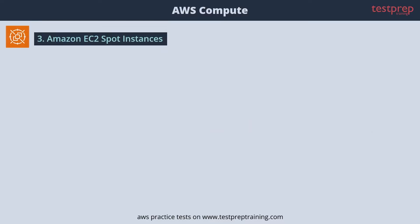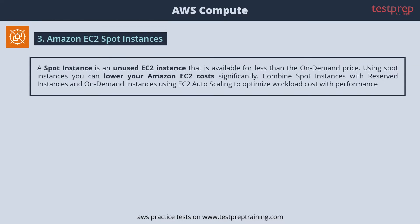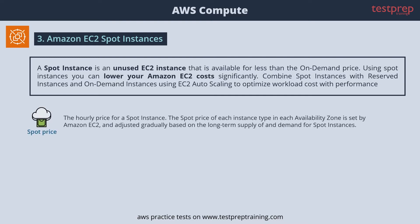Amazon EC2 Spot Instances. A spot instance is an unused EC2 instance that is available for less than the on-demand price. Using spot instances, you can lower your Amazon EC2 costs significantly. Combine spot instances with reserved instances and on-demand instances using EC2 Auto Scaling to optimize workload cost with performance.